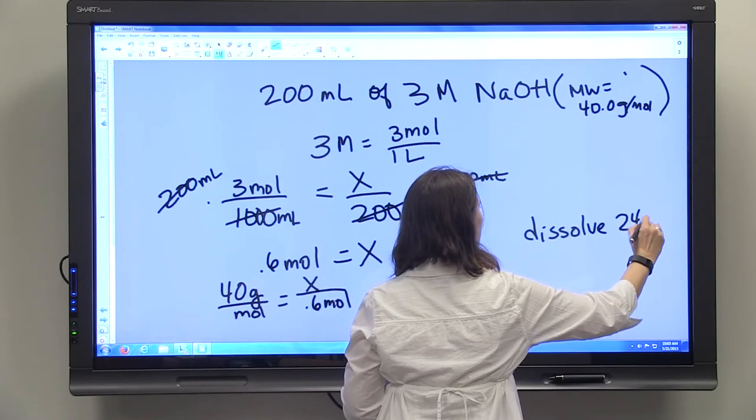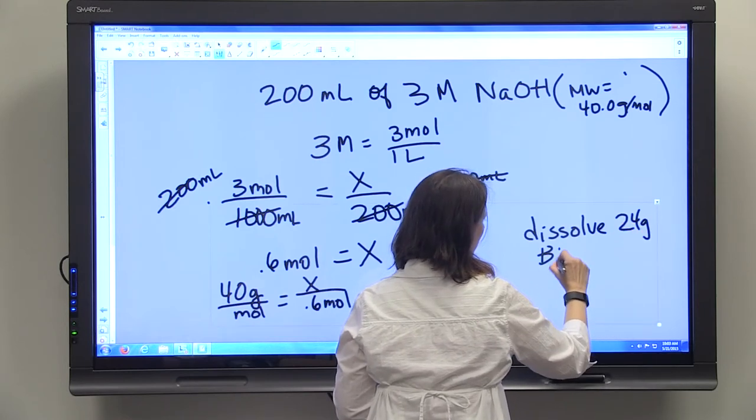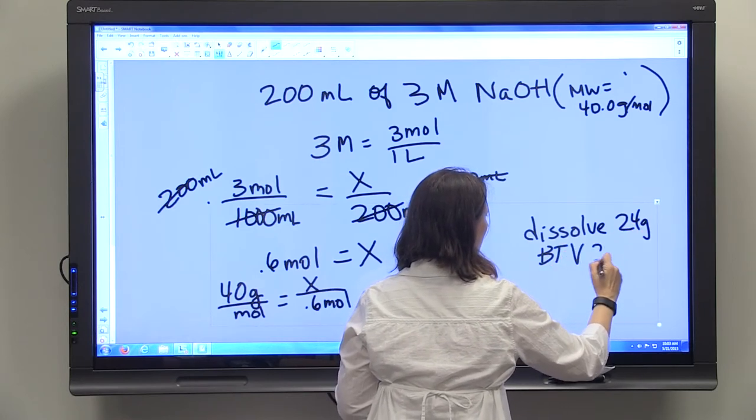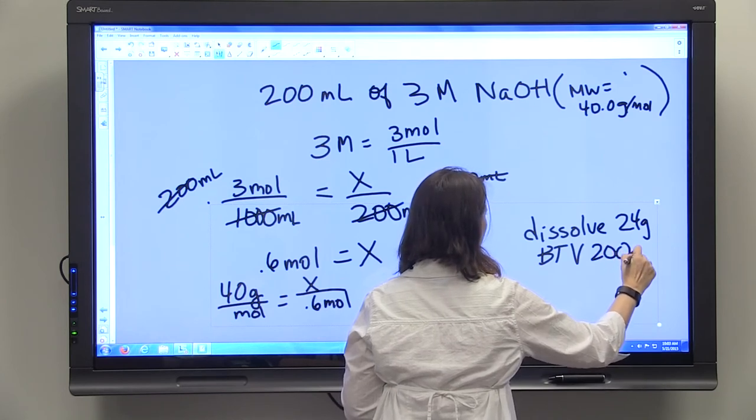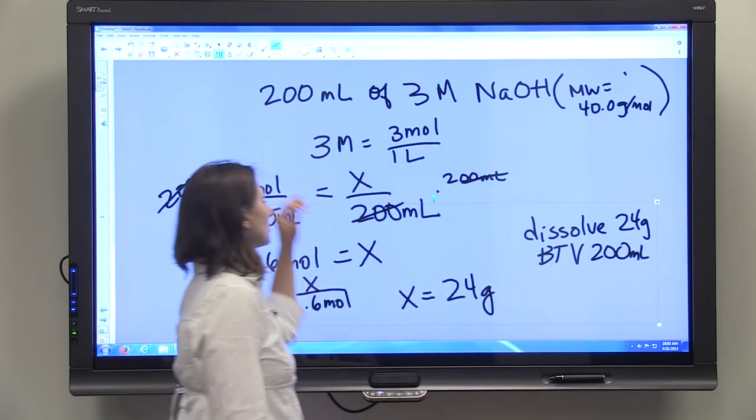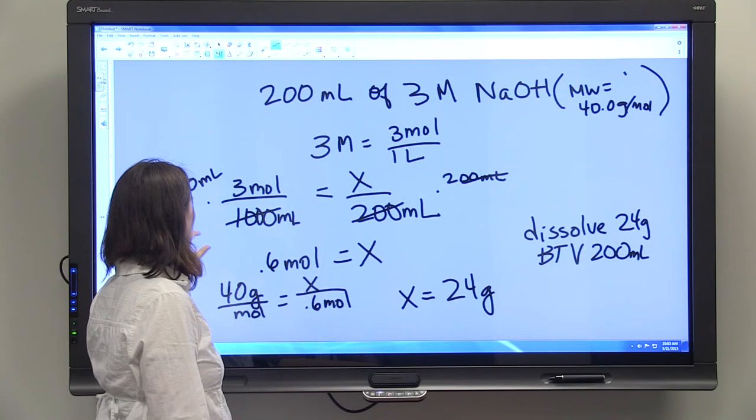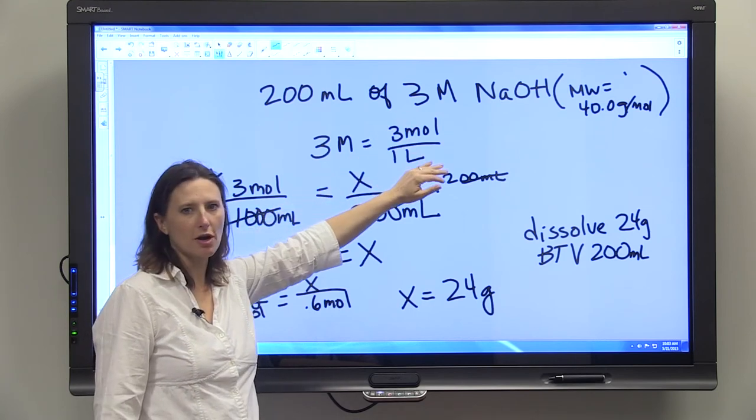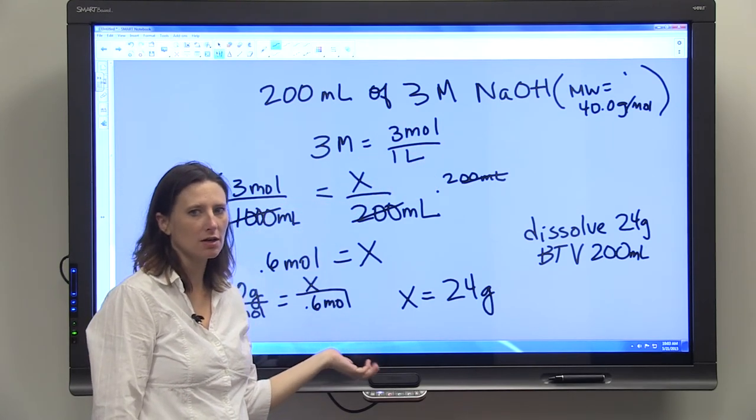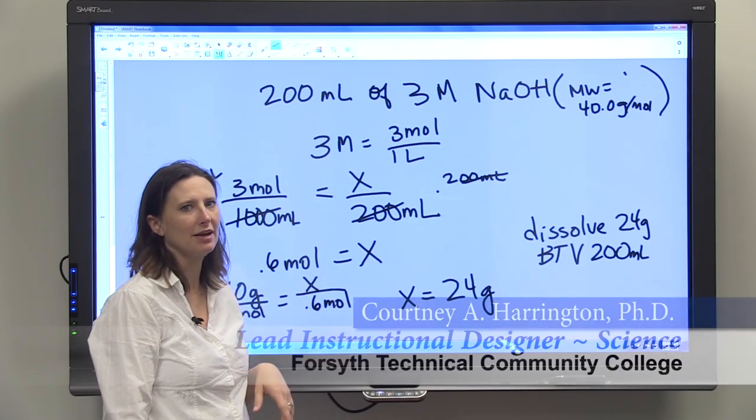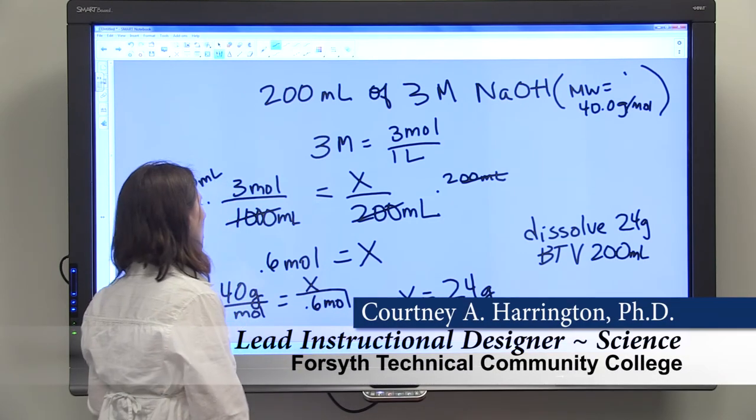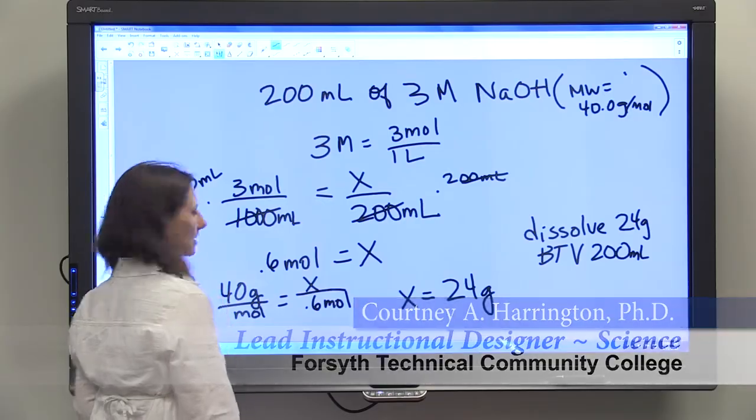...and we're going to bring to volume of 200 mL. So you can see how setting up your proportions becomes easier if you can move your concentration into terms of a liter if you're dealing with molarity, and into terms of 100 mLs if you're dealing with percent.